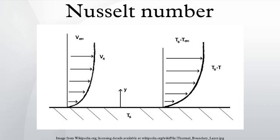Where L is the characteristic length, K is the thermal conductivity of the fluid, H is the convective heat transfer coefficient of the fluid. Selection of the characteristic length should be in the direction of growth of the boundary layer.